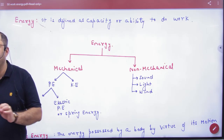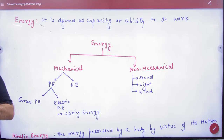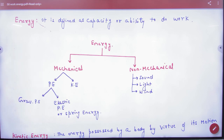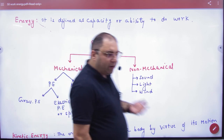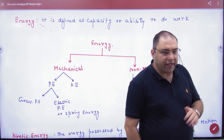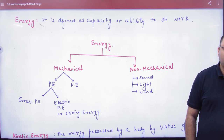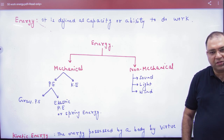The last part is energy. If you have to define energy, how do we define it? Energy is defined as the capacity or ability to do work. Energy is divided further into two parts: one is mechanical and one is non-mechanical. There are only two types of mechanical energy.